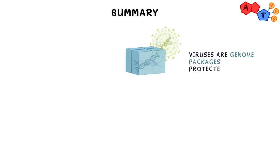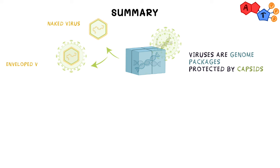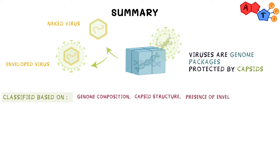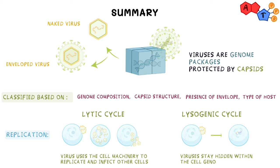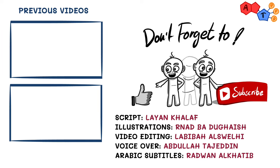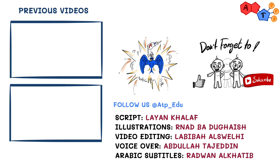So let's do a quick recap. Viruses are genome packages protected by capsids, which may or may not be surrounded by a lipid bilayer envelope. They can be classified according to genome composition, capsid structure, presence of envelope, and type of host. Through the lytic cycle the virus uses the cell's machinery to replicate and build proteins, rupturing the cell and traveling to infect others. Or they can stay hidden within the host cell genome until triggered — known as the lysogenic cycle. That's it for the introduction to virology; we hope you found it beneficial. Don't forget to like, share, and subscribe, and as always, thanks for watching.